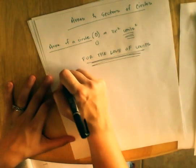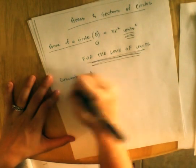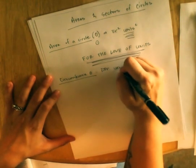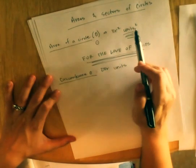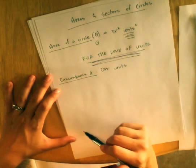We also have the circumference of a circle which we know is 2 pi r units. Notice the area is unit squared. Circumference or the length of a circle is just units.